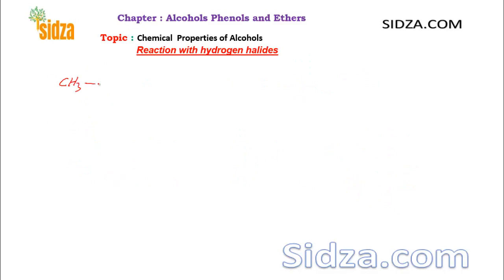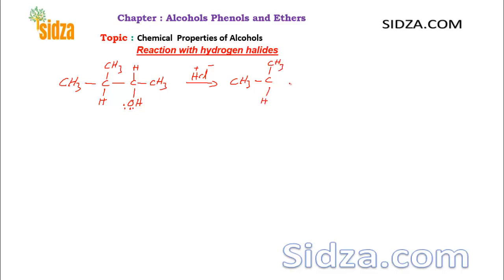If you react a molecule with HCl, the same process occurs: protonation happens, water leaves, and you get a carbocation intermediate. Looking at this carbocation, it is a secondary carbocation — a 2° carbocation. When the Cl⁻ nucleophile attacks this secondary carbocation, you get the corresponding chloro product.